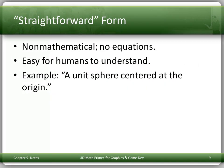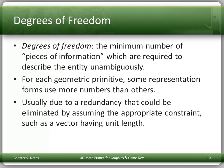Straightforward form is the one we use when communicating with each other. It's non-mathematical — there are no equations. It's easy for humans to understand. If I say 'a unit sphere centered at the origin,' you all know what I mean. The concept of degrees of freedom: the number of degrees of freedom is the minimum number of pieces of information required to describe the entity unambiguously. Some representation forms use more numbers than others, usually due to redundancy that could be eliminated by assuming appropriate constraints, such as a vector having unit length.